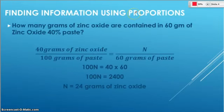So using that information to solve some proportions. Here's an example. We want to know how many grams of zinc oxide are contained in 60 grams of zinc oxide paste. That's a 40 percent paste. Now remember, anytime you see that percent, you know right away that you have a ratio. So start with that. Write that percent as a ratio.